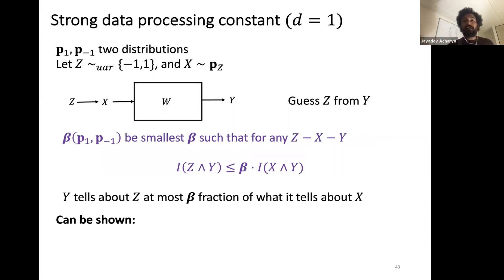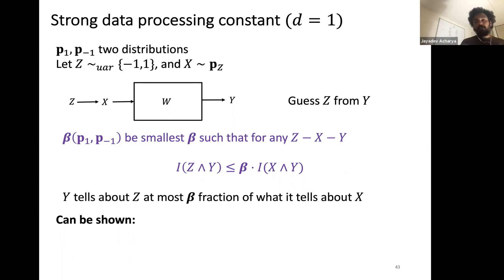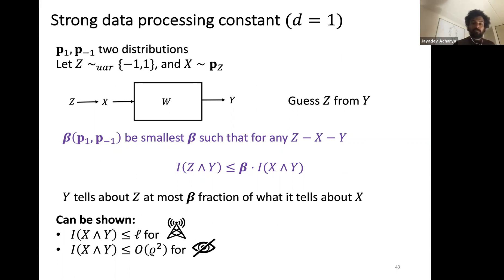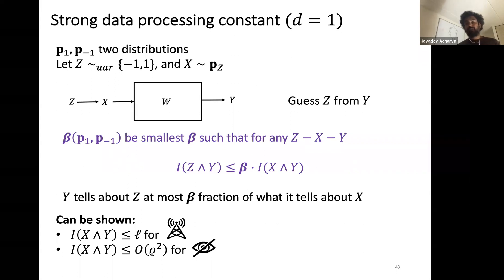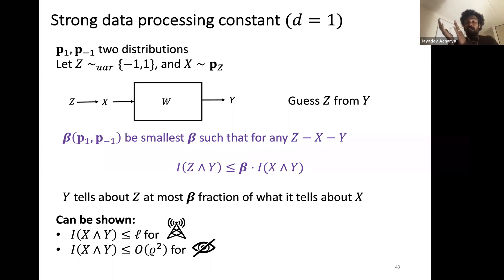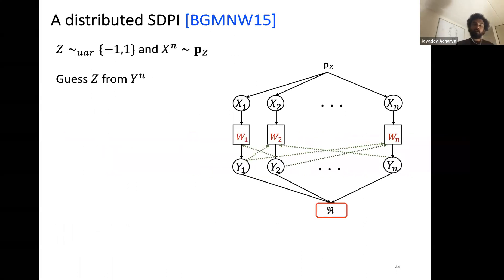The SDPI constant beta is obtained by constructing priors nicely. For an l-bit channel, the mutual information is at most l; for a local differentially private channel it is order rho^2. This bounds I(z;y), and by Assouad's method this must be large, giving a lower bound on sample complexity.